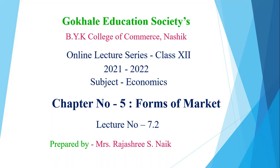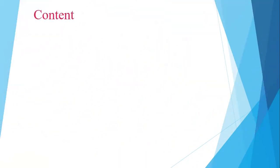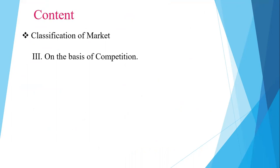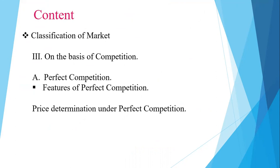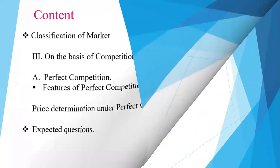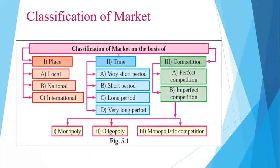Today, in this online lecture, we will study the next part of chapter number 5. In this lecture, we are going to study about classification of market on the basis of competition — in that, perfect competition, features of perfect competition, price determination under perfect competition, and expected questions. In the last lecture, we covered classification of market on the basis of place and time. Today, we will see the next classification on the basis of competition and cover the first part, that is perfect competition.